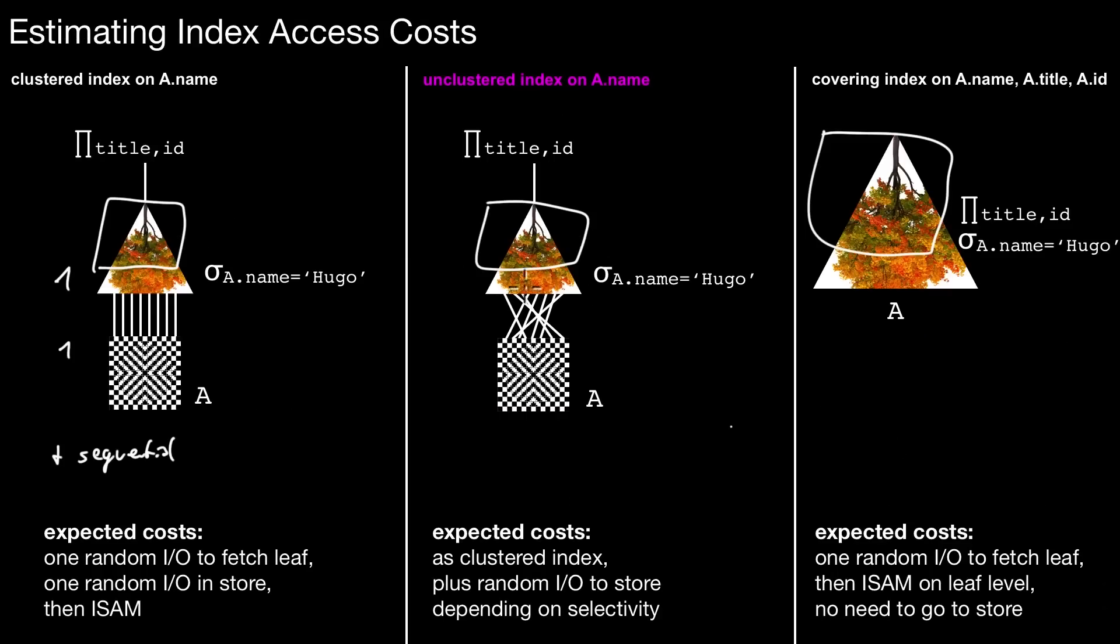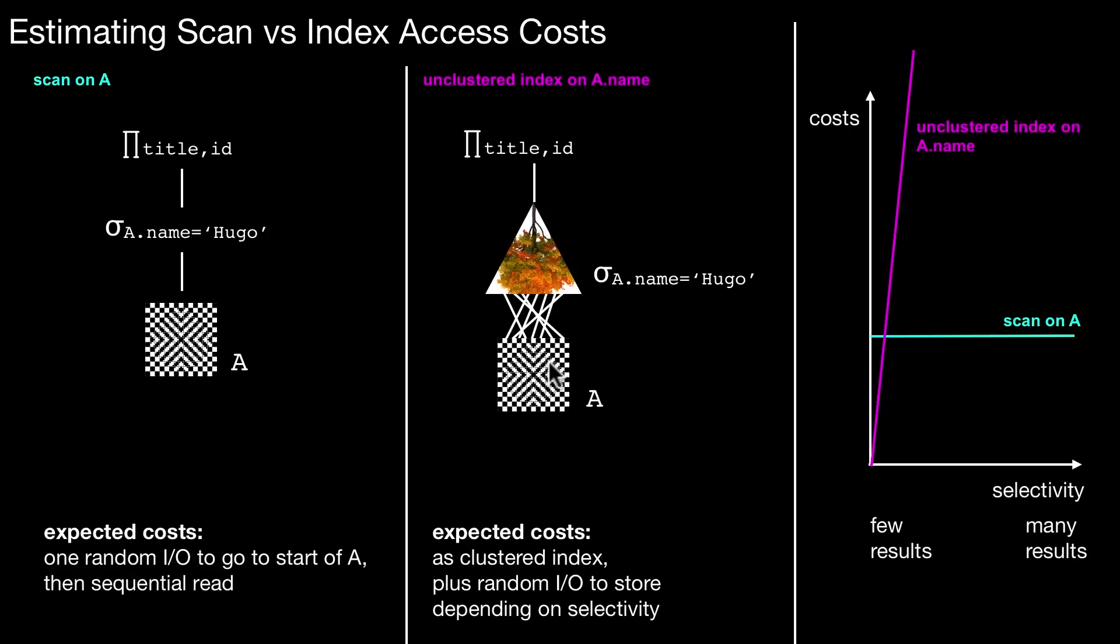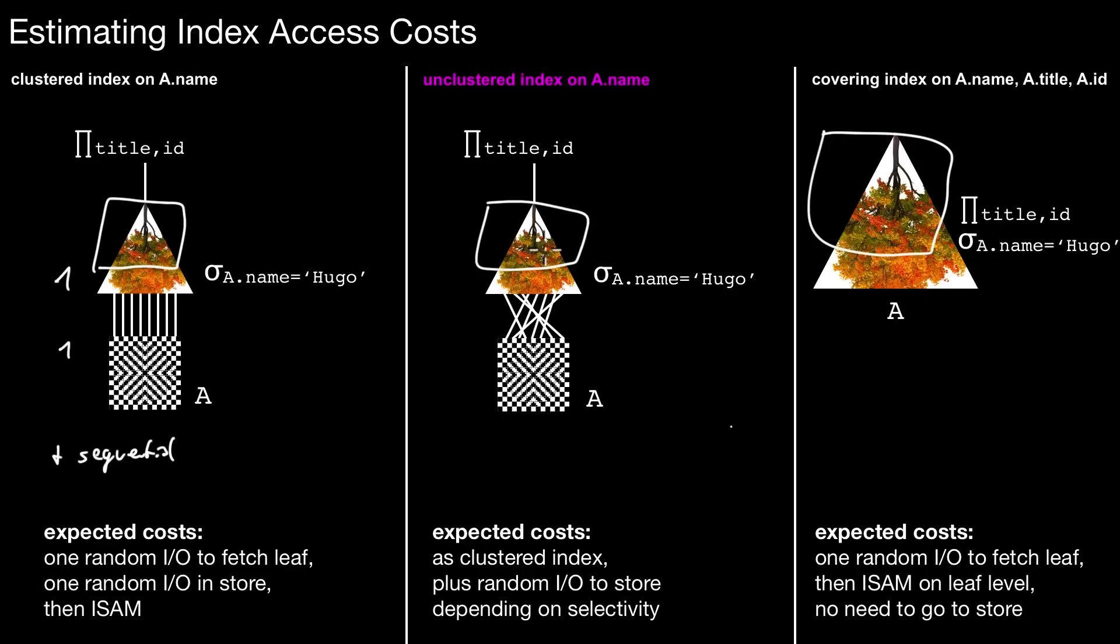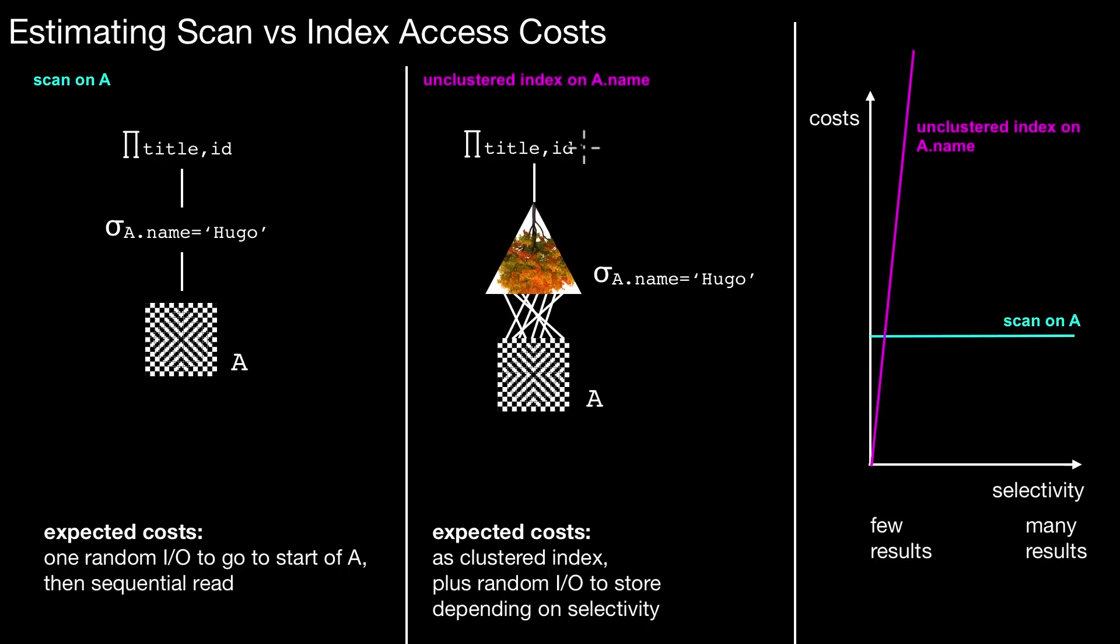And the query optimizer has to be very careful, especially with the unclustered indexes here. Because here, the number of tuples that qualify have a linear relation to the number of random IO you perform on the data store. So if you just look up one tuple here, you trigger one random IO on the data store. However, if you look up a thousand tuples in the unclustered index, you may potentially trigger a thousand different random IOs on the data store. And that may be super expensive. So if you assume you only have an unclustered index on a.name, that is what we had here. That is the same unclustered index as in this slide. So now, let's assume the query optimizer makes a decision among those two options. Just the scan on A or use the unclustered index.